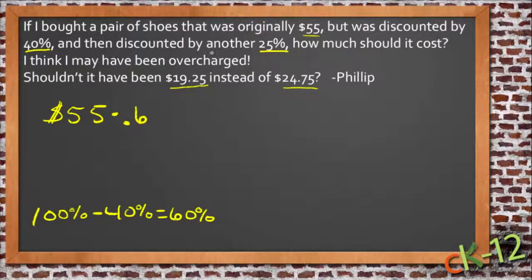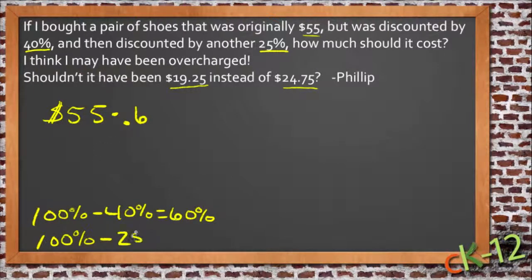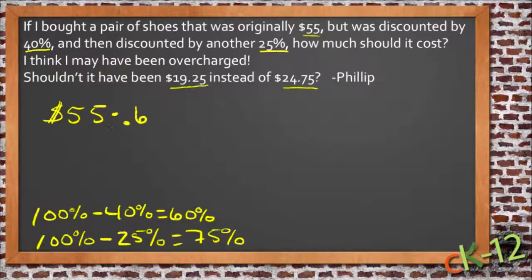Then it said it was discounted by another 25%. So similarly, if our new price, whatever that is, we consider that the whole price now — so we have 100%, which is our new whole price, the discounted one — and we take away 25% of that, then the remainder is 75%. So you'll have your original price, and you'll pay 60% of that, and then you'll pay 75% of that price, of the originally discounted price.